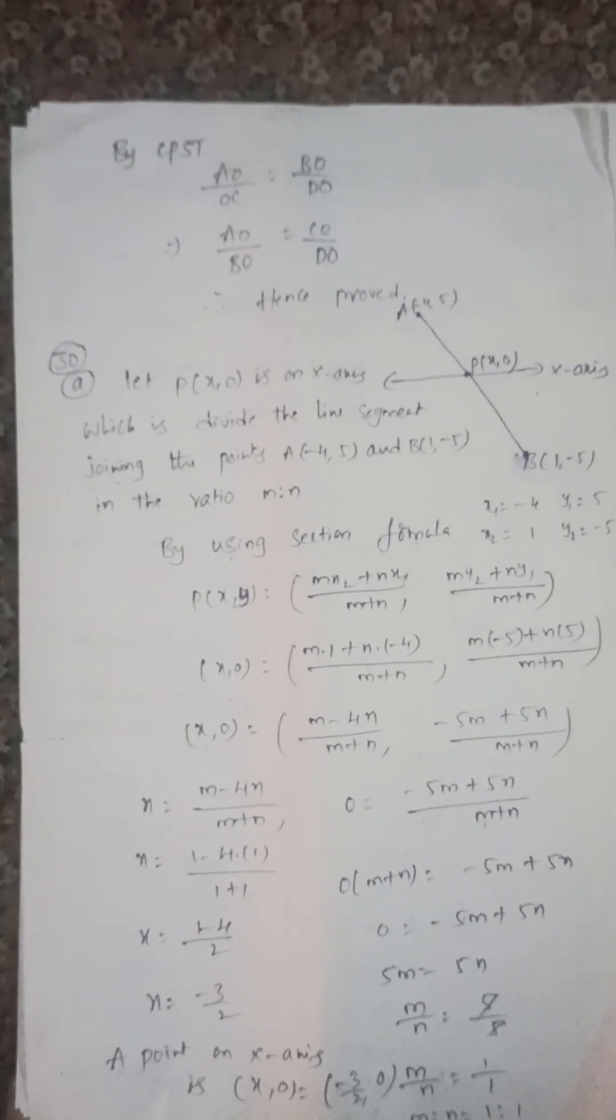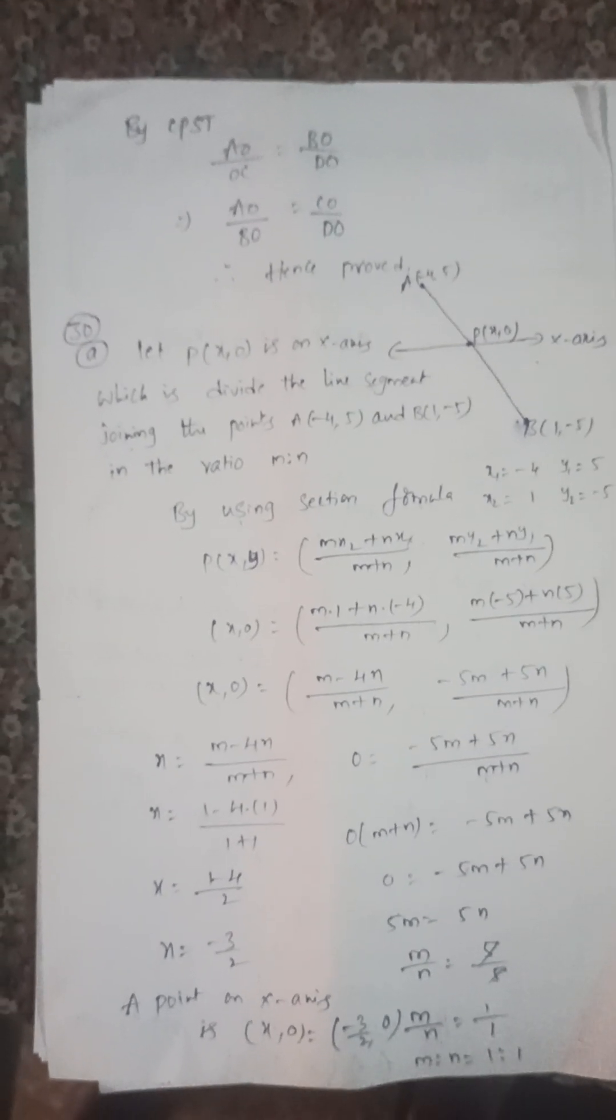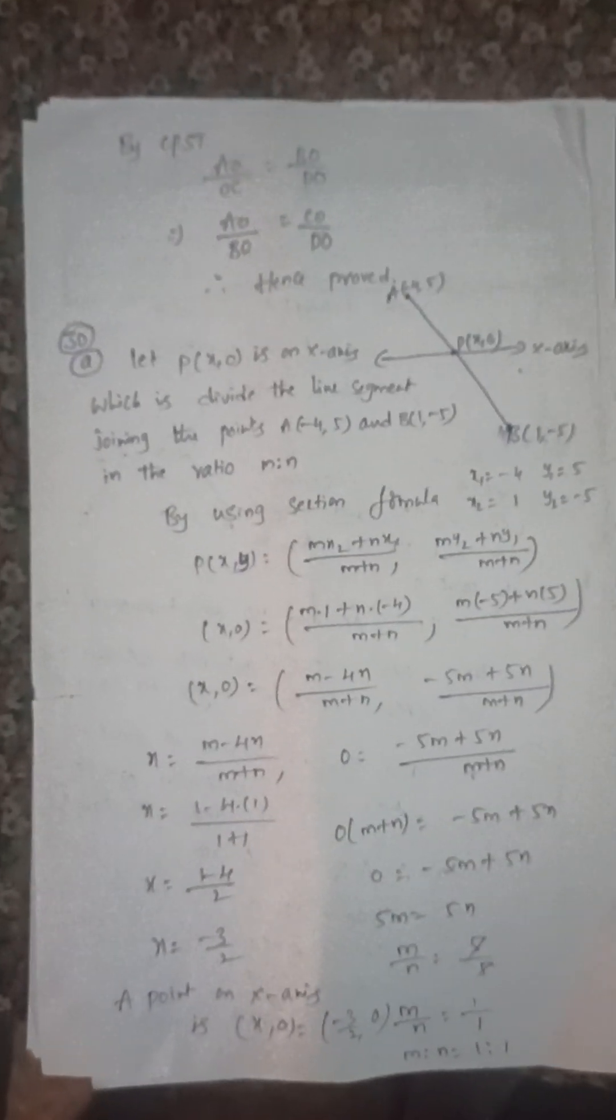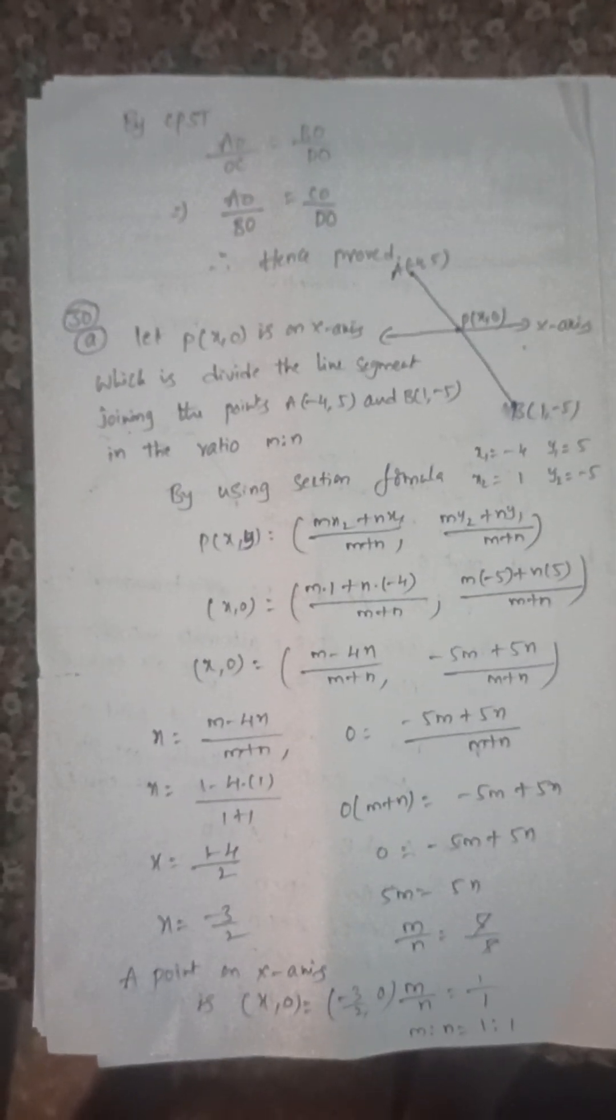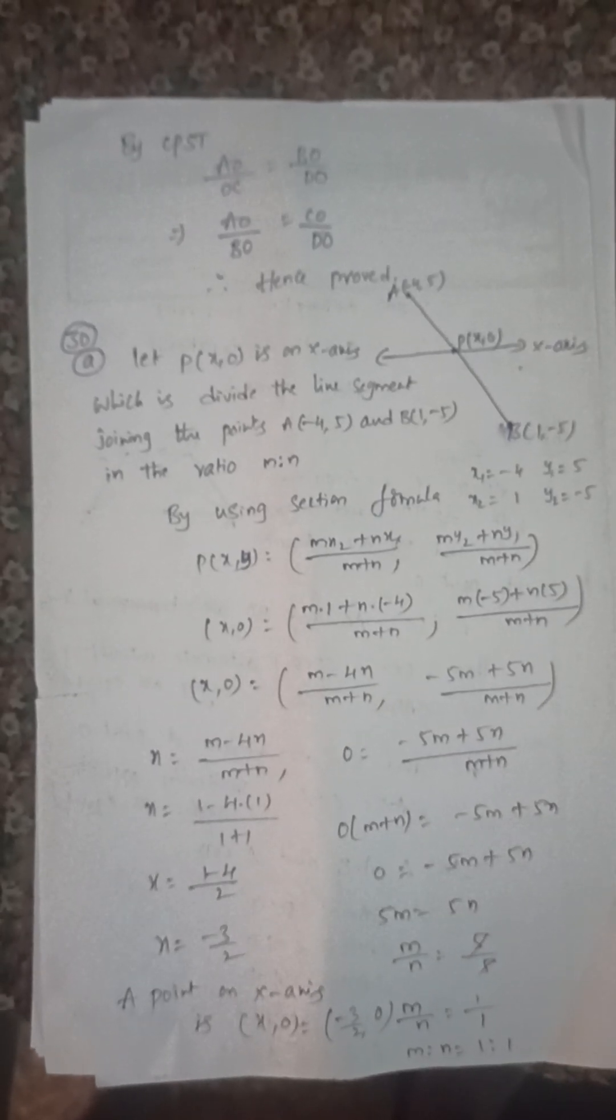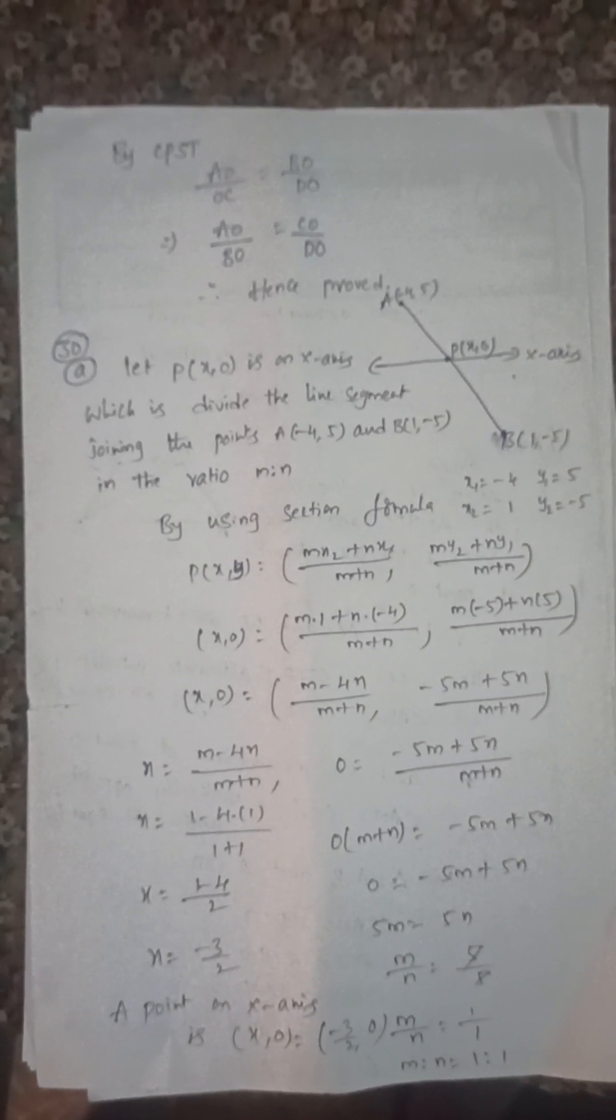Next, a line segment joining the points (-4, 5) and (-1, -5) meets the x-axis at the point (x, 0). So what's the ratio? That is 1:1. How you can find this? By using section formula.